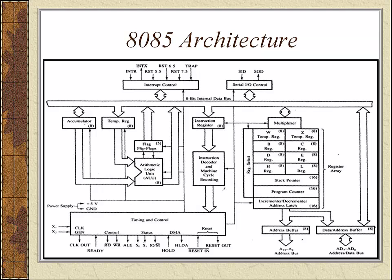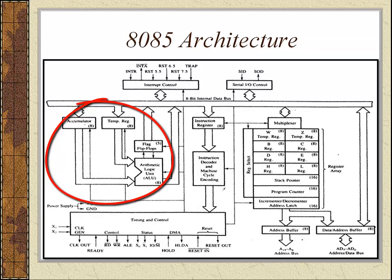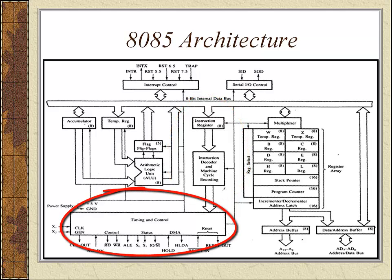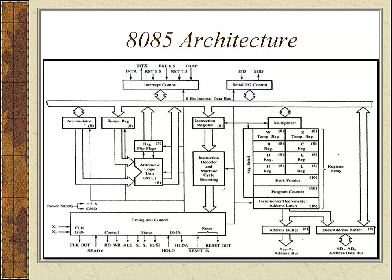This is the 8085 architecture. Let us identify the various units we have listed. The first one is the register set, shown over here. The second one is the bus interface unit, which we can see below the register set. The third one is the arithmetic and logic unit, which is on the left hand side of the screen. The instruction decoder and machine cycle encoding unit is in the center. The timing and control unit is at the bottom left, and the interrupt control and serial communication module is at the top of the screen.